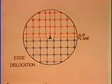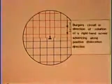The Burgers Vector of an edge dislocation is normal to the dislocation. The slip or glide plane is defined by the Burgers Vector and the dislocation line.